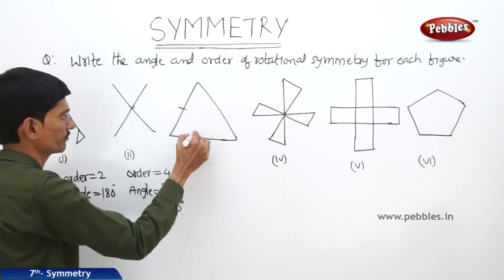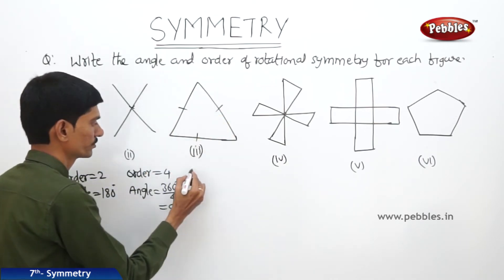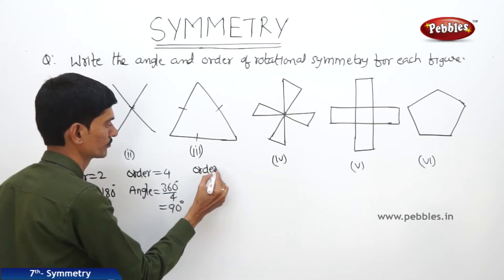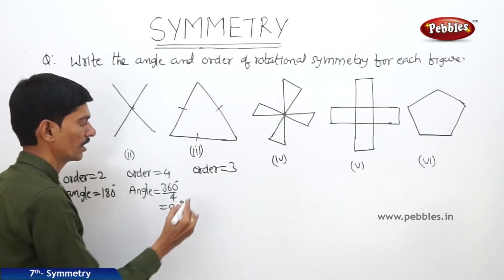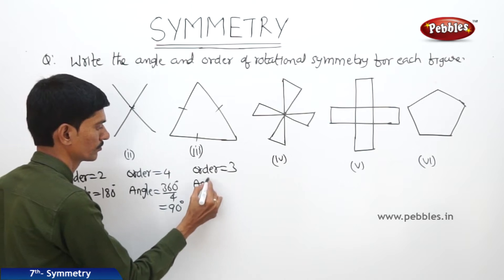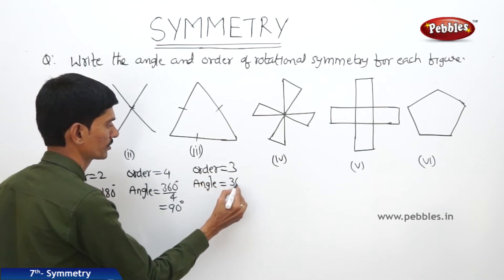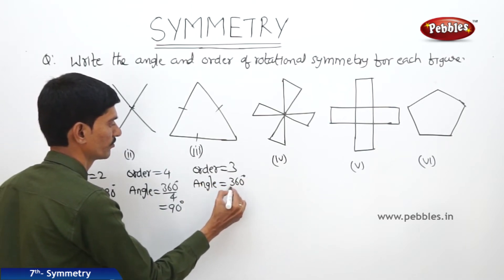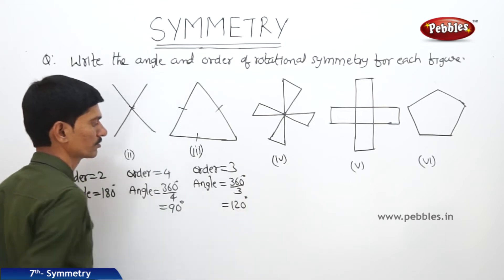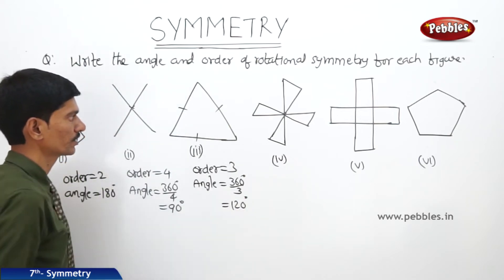Now in case of an equilateral triangle, the order is 3. Then the angle is 360 degrees divided by 3, which equals 120 degrees. So the angle of rotational symmetry is 120 degrees.